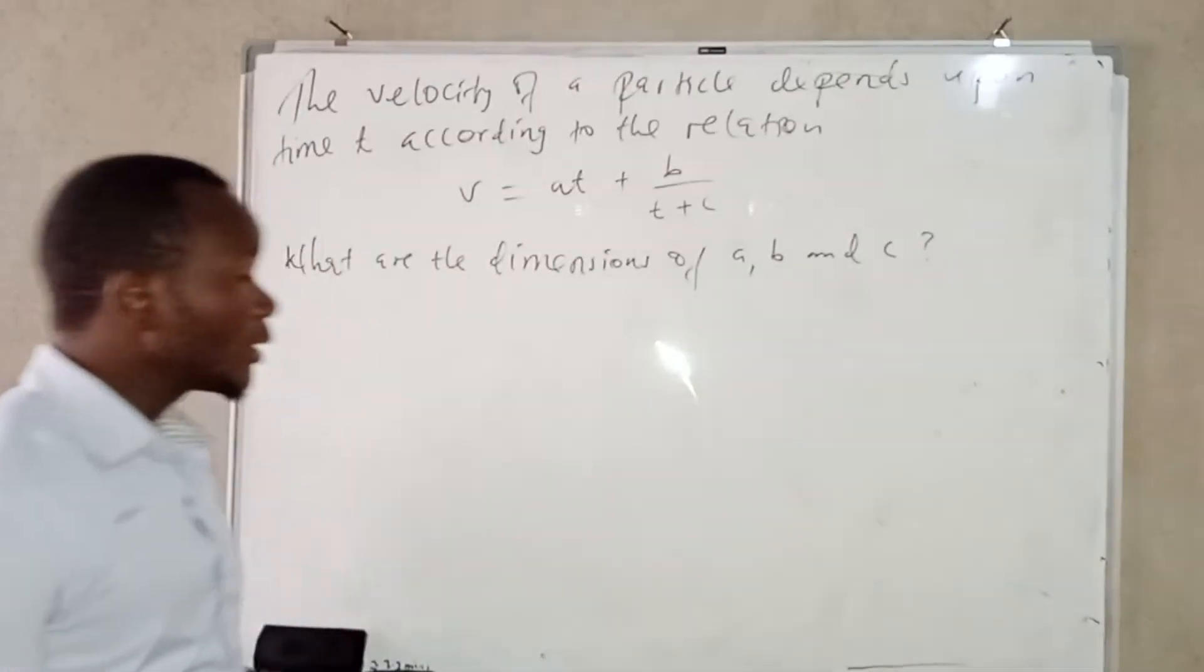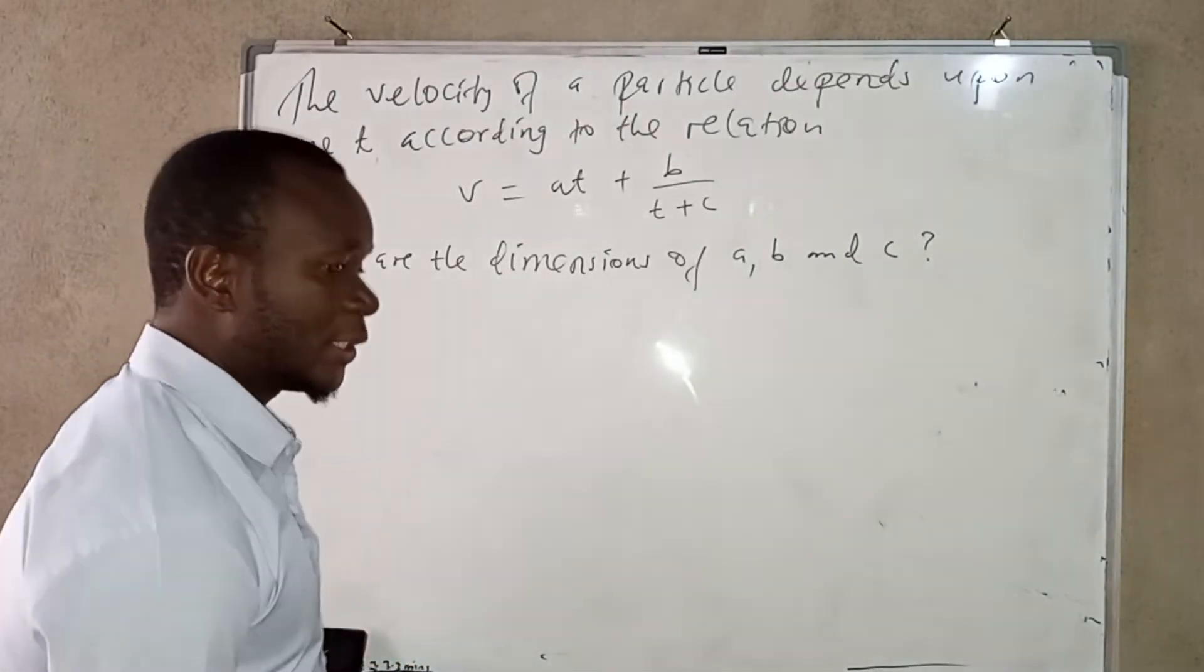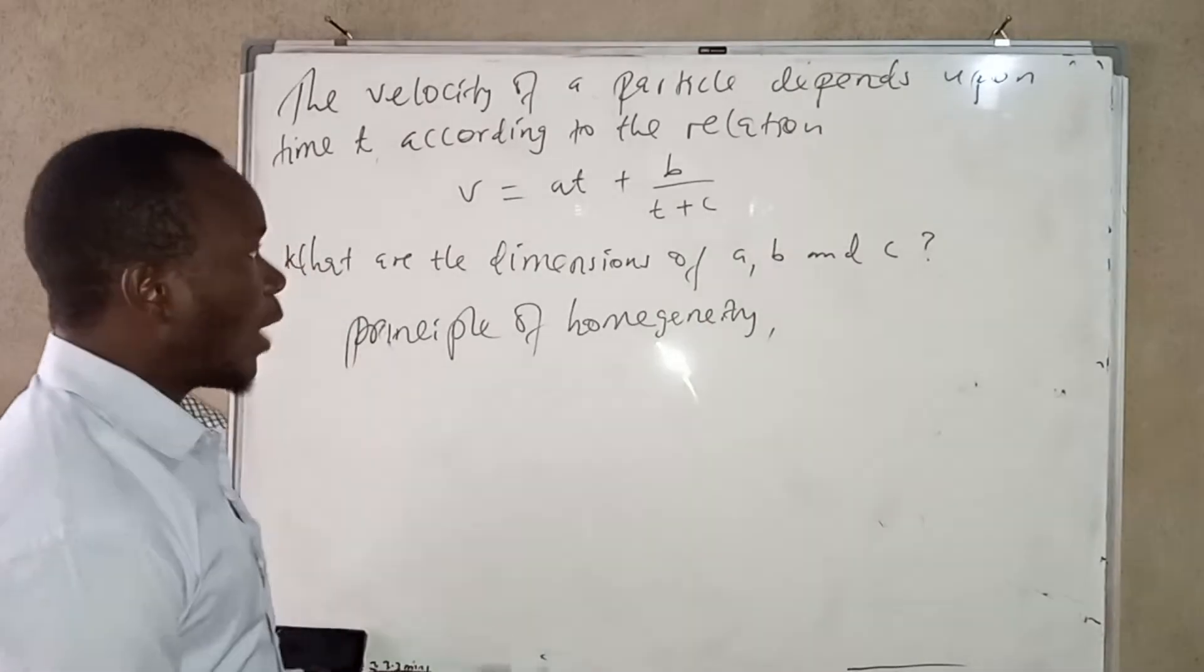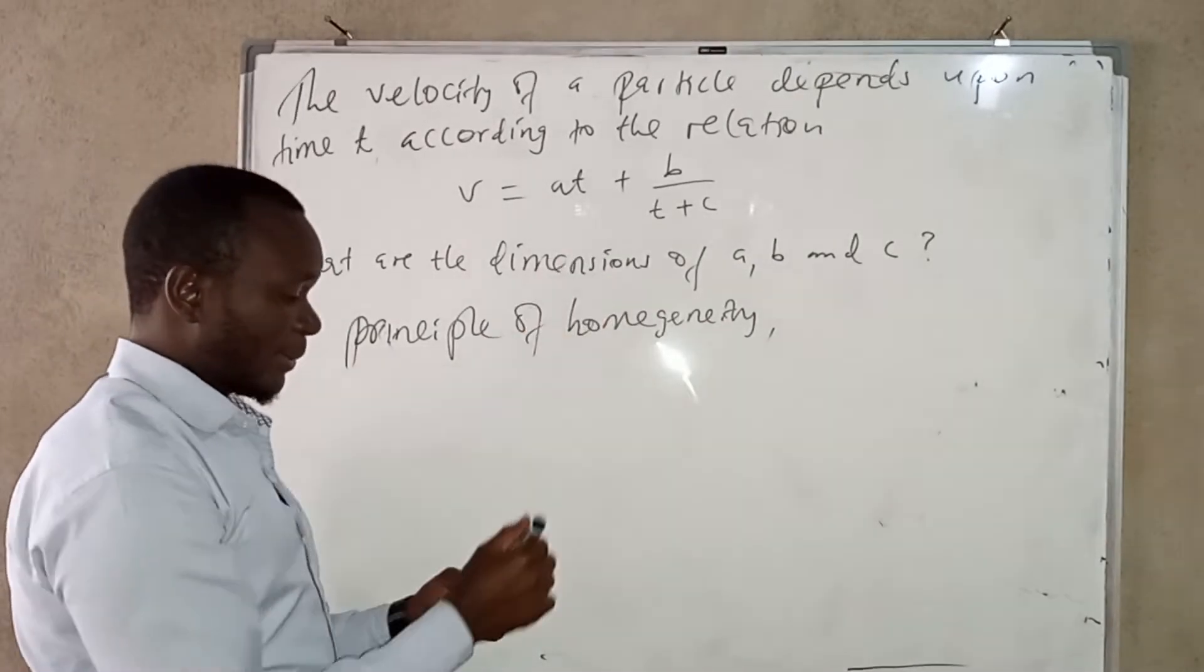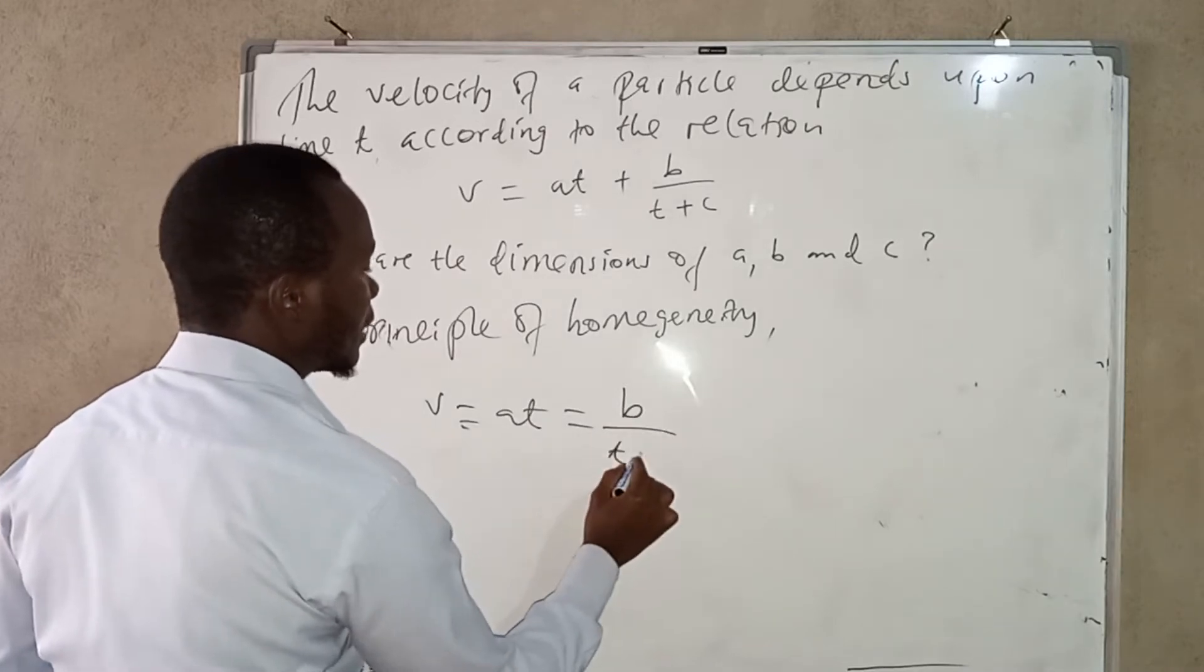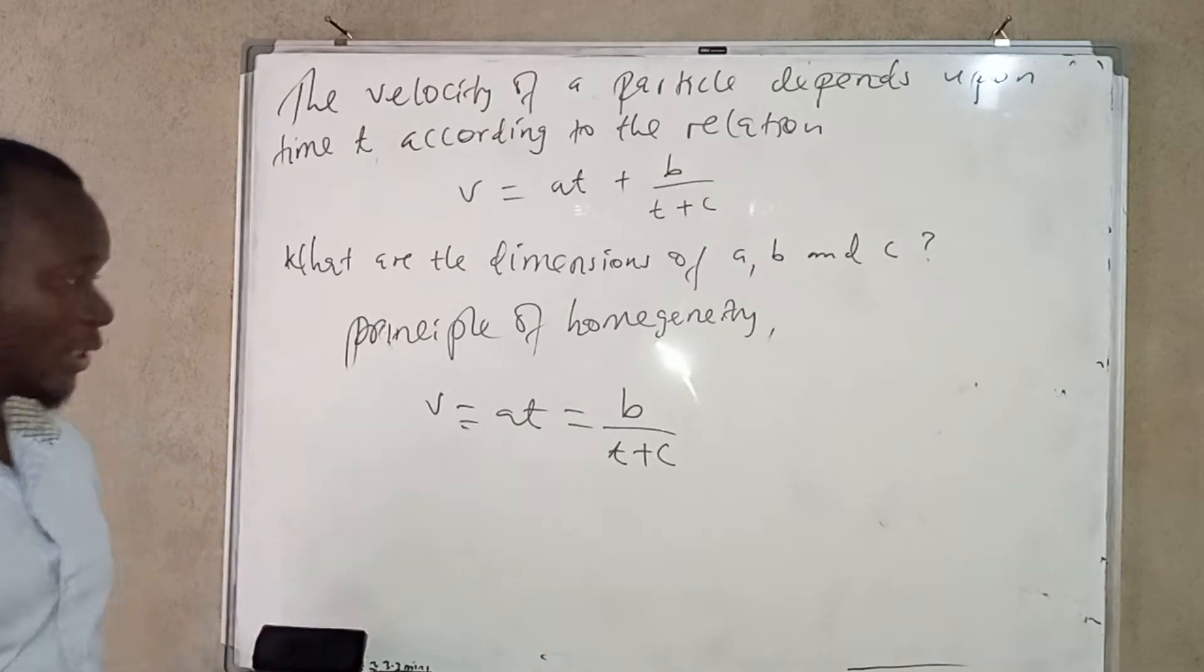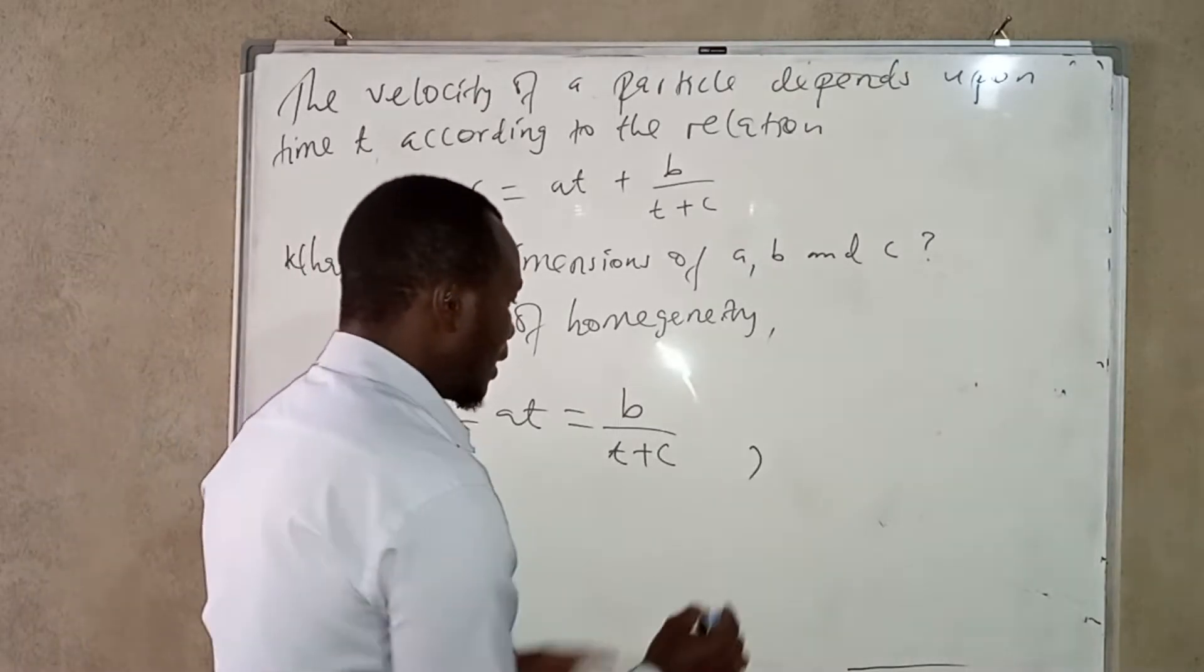So without wasting much time, according to the principle of homogeneity, what you can add or subtract must have the same dimensions. So a t is equal to b over t plus c in terms of dimensions, and at the same time this one, at the same time in order for c and t to be added they must have the same dimensions.